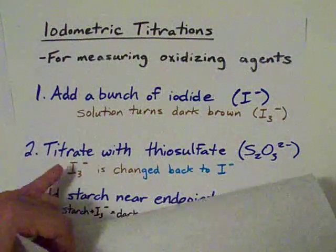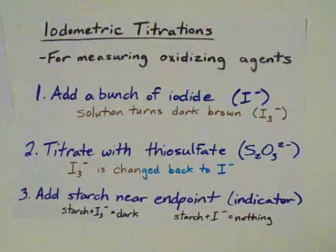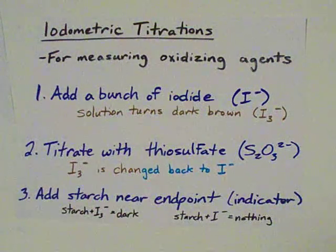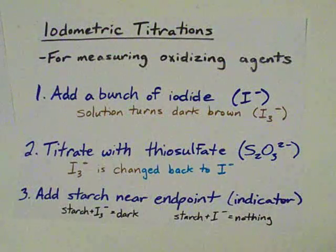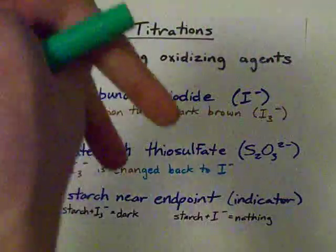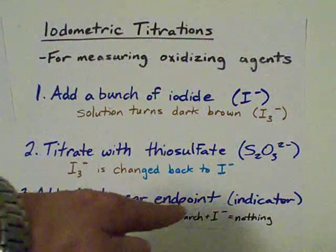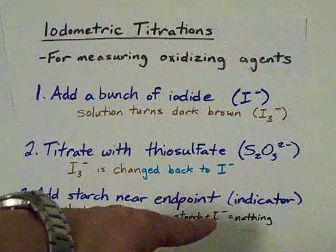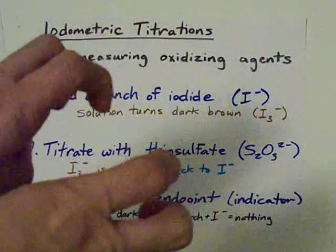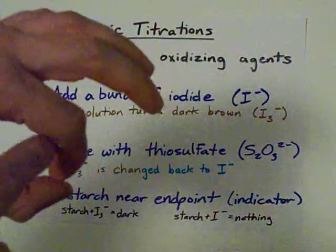Now the deal with this kind of titration is it's tough for us to actually detect I3 minus, but we got a little trick up our sleeves. We add starch near what we think is the end point of the titration, because somehow starch and I3 minus make love, and that produces a very dark compound. Whereas if you have starch and it's only I minus left, there's no color at all.